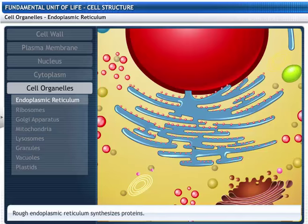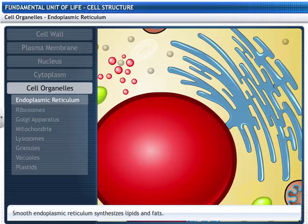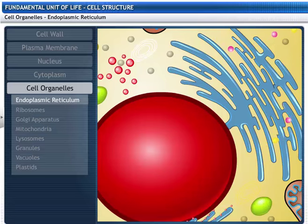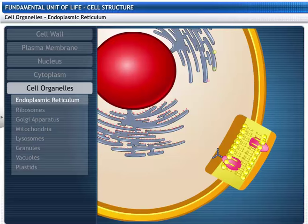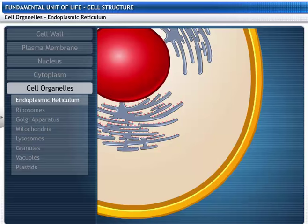Rough endoplasmic reticulum synthesizes proteins, while smooth endoplasmic reticulum synthesizes lipids and fats. Some of these proteins and lipids help in building the cell membrane, and some function as enzymes and hormones. Endoplasmic reticulum serves as channels for the transport of proteins between various regions of the cytoplasm.